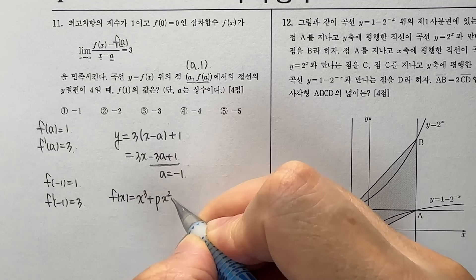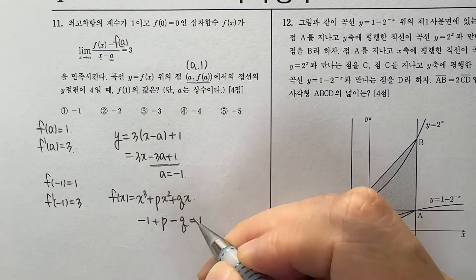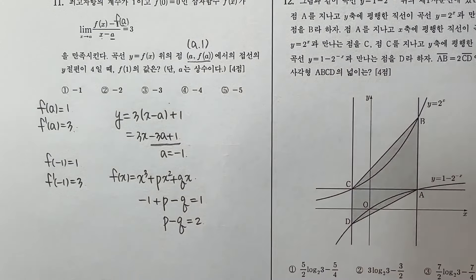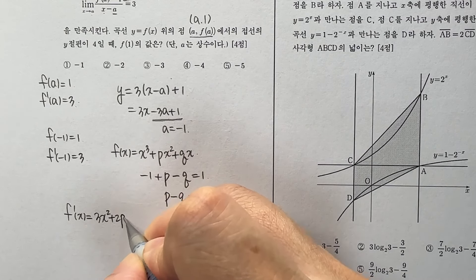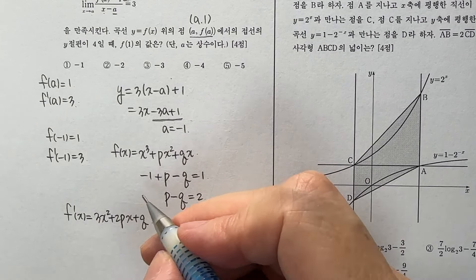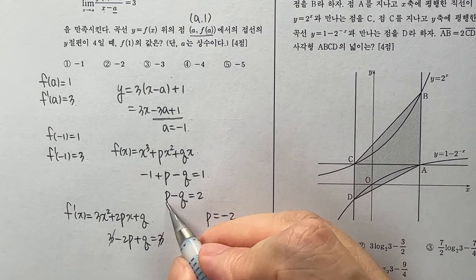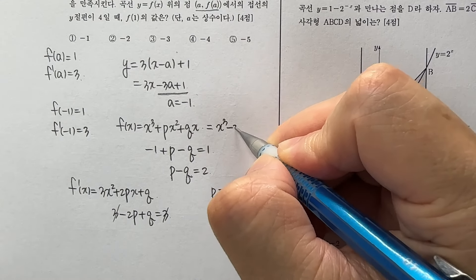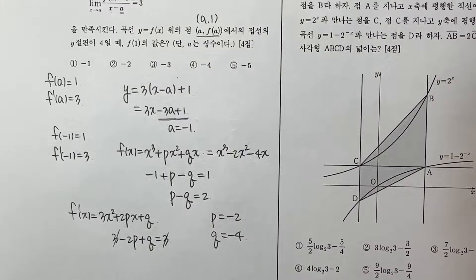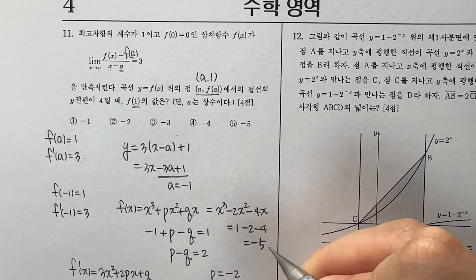접선의 방정식 y = 3x - 3a + 1에서 y절편이 4니까 -3a + 1 = 4, a = -1이 됩니다. f(-1) = 1, f'(-1) = 3이고, f(x) = x³ + px² + qx로 놓으면 -1 + p - q = 1에서 p - q = 2, f'(x) = 3x² + 2px + q에 -1 대입하면 3 - 2p + q = 3, q = 2p - 2p = -2, p = -2, q = -4가 됩니다. f(x) = x³ - 2x² - 4x에서 f(1) = 1 - 2 - 4 = -5, 5번이 정답입니다.